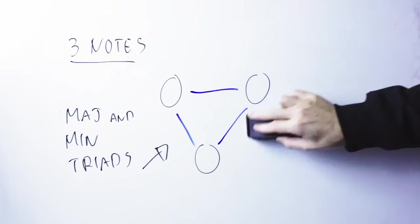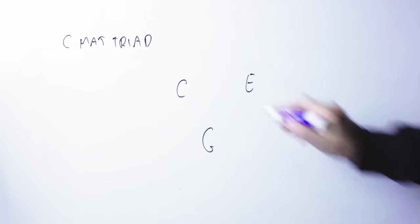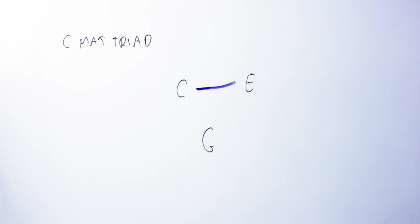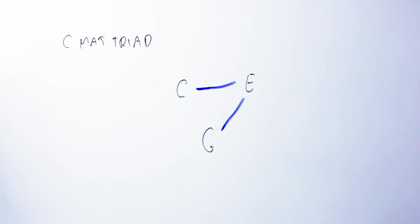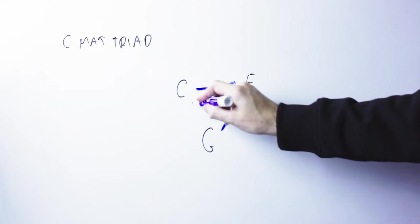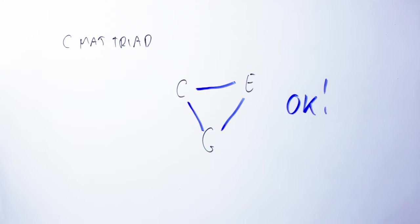So first of all, let's see what happens with a triad. So I have a C major triad, C, E, G. Well, between C and E, it's a major third. It's here in the consonant mean. Between E and G, I have a minor third. Still in the consonant mean. And between C and G, I have a perfect fifth. Great. Still in the consonant mean. So for major, it works perfectly.